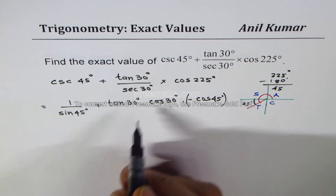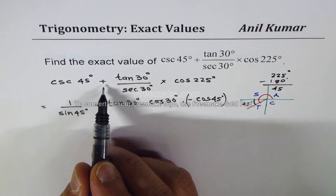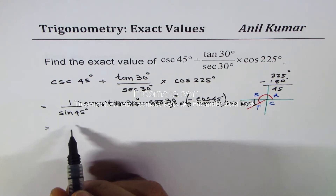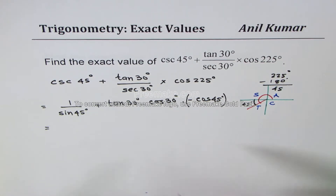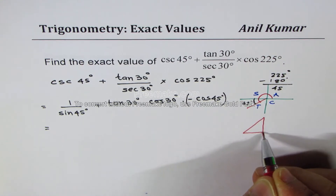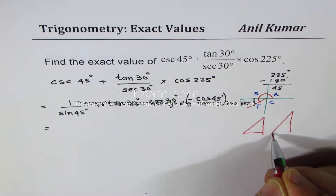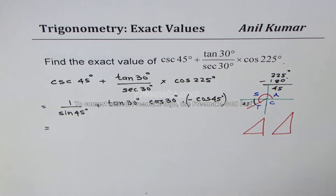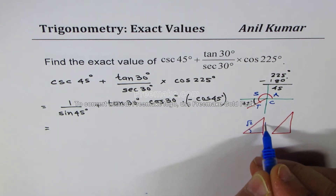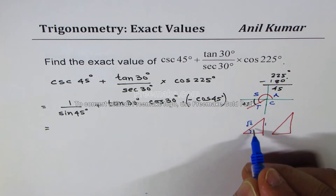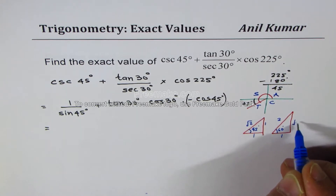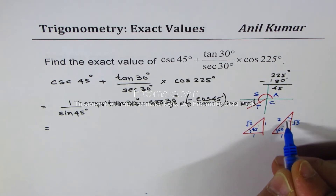This minus sign will make the term negative. Let's substitute the values by looking into our special triangles — one with 45 degrees and the other with 30-60-90. At times you may not be allowed a calculator for such questions, and that is why this helps. For 60 degrees we have 1, 2, square root 3, and this angle will be 30.